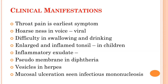Clinical features of pharyngitis: throat pain is the earliest symptom in all cases. Hoarseness of voice can be present in viral causes. Difficulty in swallowing and drinking is seen in almost all causes. Enlarged and inflamed tonsil if associated with tonsillitis. Inflammatory exudates are present in viral pharyngitis. Pseudomembrane in diphtheria. Vesicles can be present in herpes. Mucosal ulceration can be seen in infectious mononucleosis.